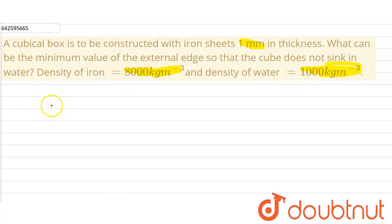We have been given that a cubical box is constructed with iron sheet which is 1mm in thickness. We have to find the minimum value of the external edge so that the cubical box does not sink into the water.